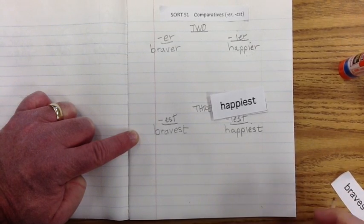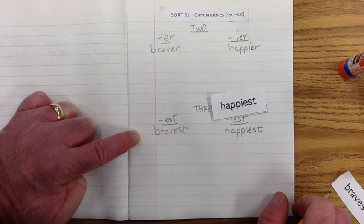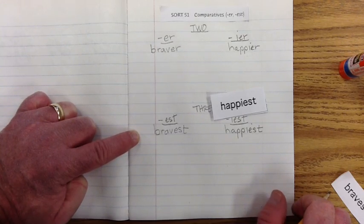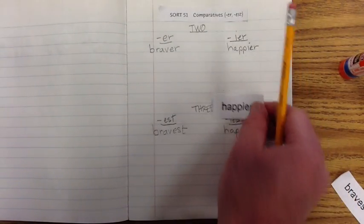And we might have a sentence like, Billy is the happiest of them all. And it might be a room of five or six or ten or twenty. More than two, right? So, when there's more than two, like three or more, then we have to use E-S-T at the end. All right.